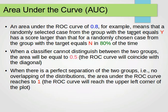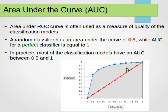When a classifier cannot distinguish between the two groups, between the yes and no classes, the area will be 0.5. The ROC curve will coincide with the diagonal line, as we mentioned before, this line here.